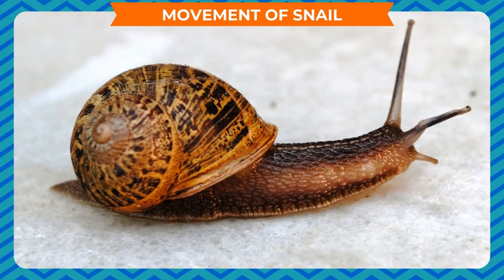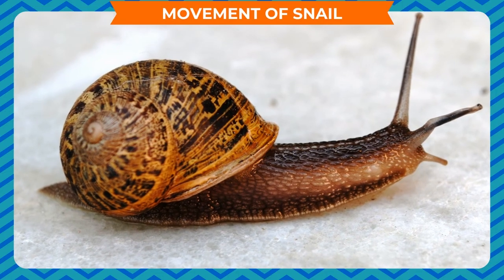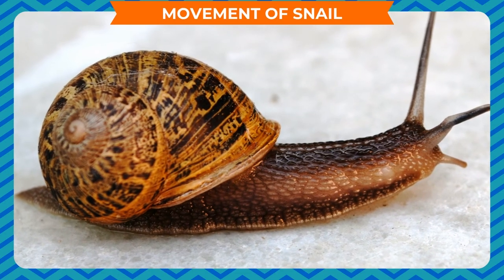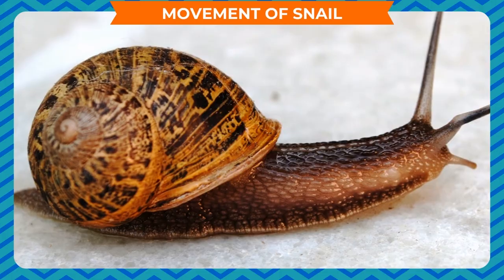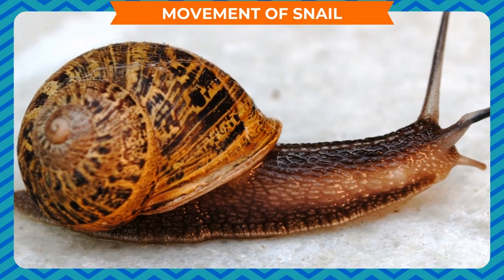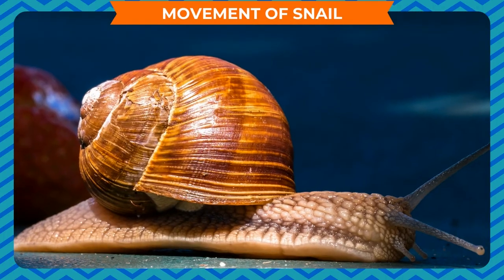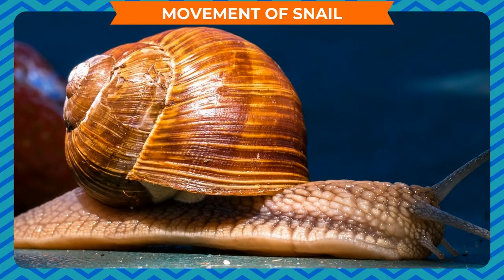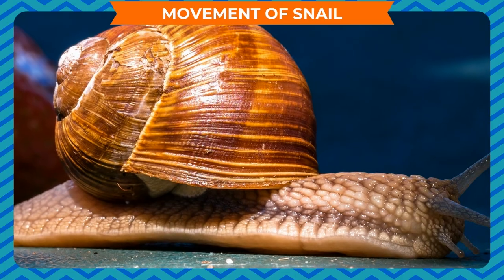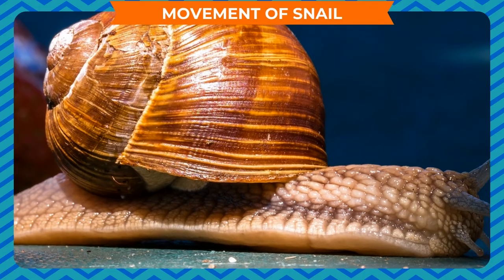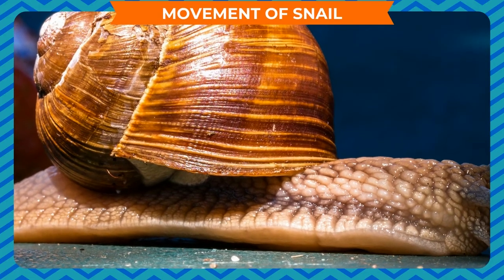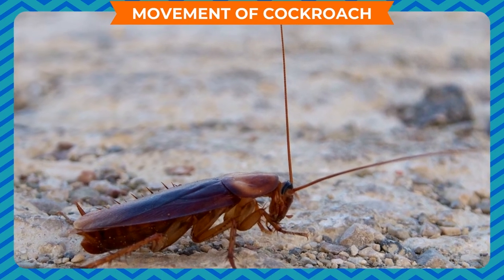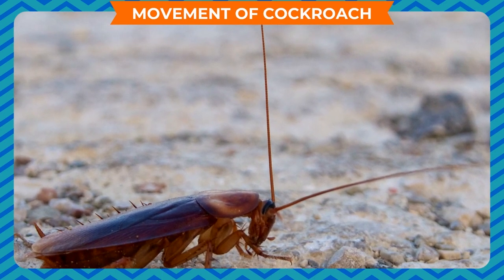Movement of snail: Snails are very slow-moving animals. They have a shell inside which they can hide to protect themselves from heat and other animals. Snails move using a muscular organ called the foot, which produces a slimy substance called mucus on which they crawl.